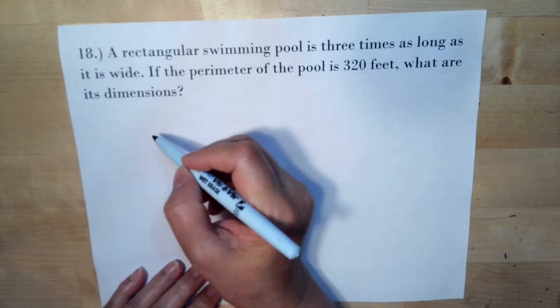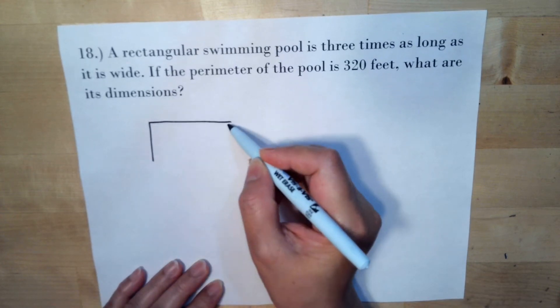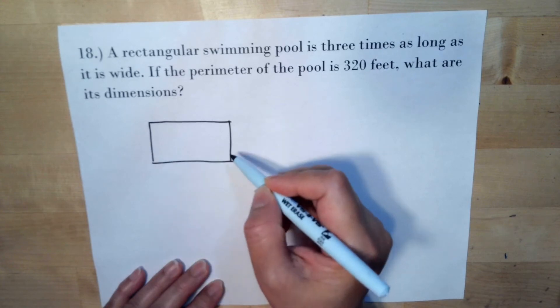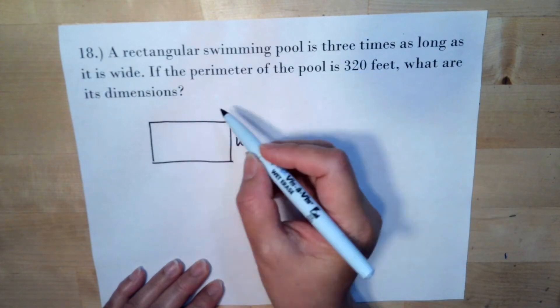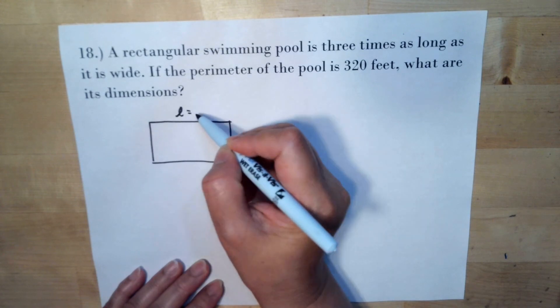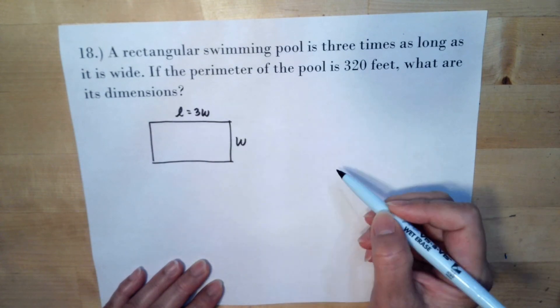We have a rectangular swimming pool. If this is the width, it says the length is three times the width. So if this is the length, this is three times the width.